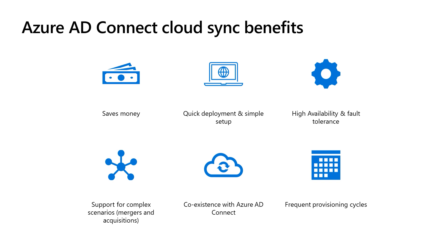Cloud Sync is extremely quick to deploy and simple to configure, so you can get it up and running in your environment in a fraction of the time spent deploying the other options. The simple setup is intuitive and streamlined so that you can enable your end users to start collaborating quickly and seamlessly with minimal effort. Multiple agents can be deployed in your environment to provide high availability and automatic failover, preventing a service outage due to a server or network failure. This will help prevent frustrations for your end users and will reduce support calls for things like unprovisioned users or out-of-date group memberships.